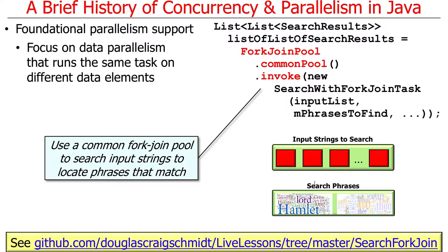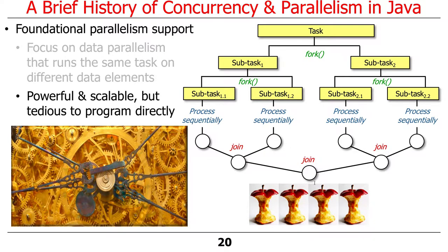Here's an example of using the fork-join pool — and we'll talk more about this shortly, because that's what your next assignment is about after assignment one. We have a common fork-join pool that searches input strings to locate phrases that match, searching all the works of Shakespeare to find phrases. It illustrates how the fork-join pool can be used and is very powerful, as you'll discover when you write the code. But you'll also discover it's a bit tedious to program, because you have to do the splitting, forking, figuring out how to get results back together, and joining. So it's powerful but requires a lot of human interaction.